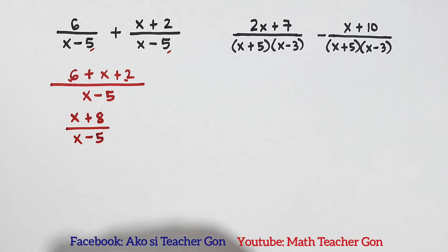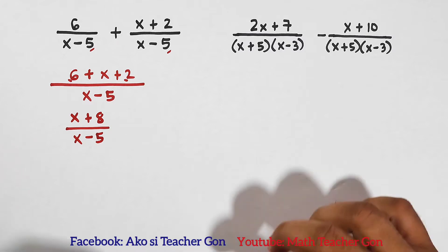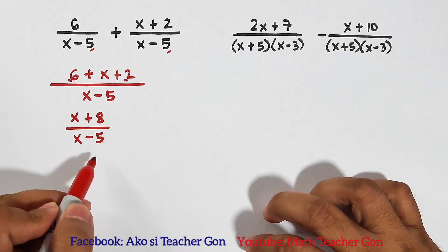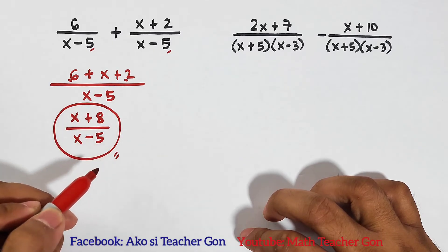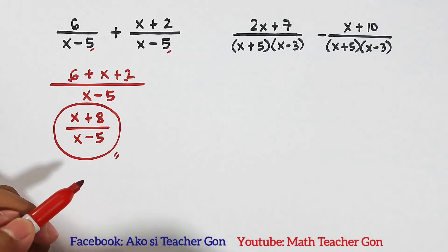Now let's check if we can still simplify this given expression or the sum. Here, x plus 8 over x minus 5 is already simplified, so we can declare that this is the final answer for item number one.